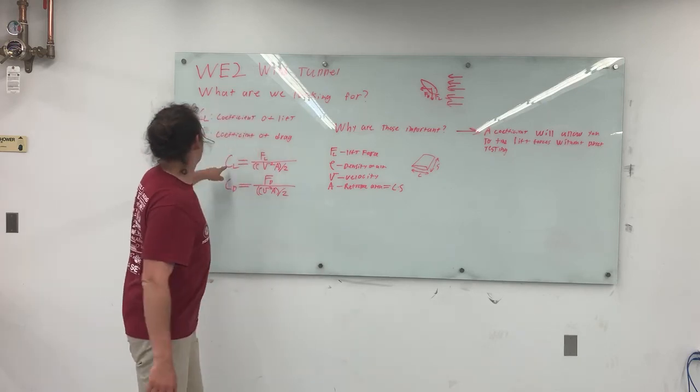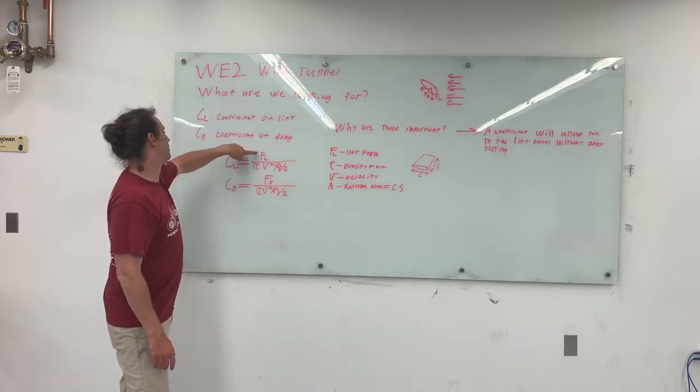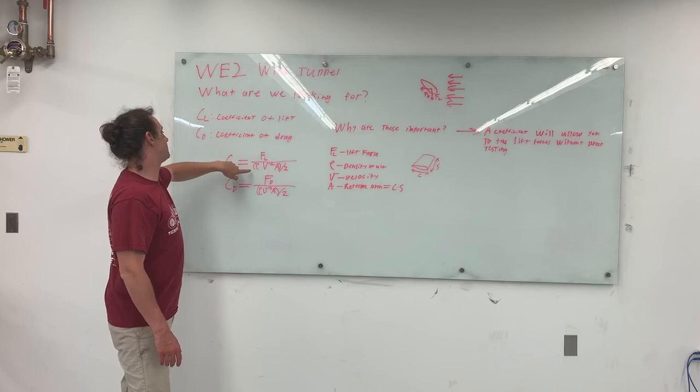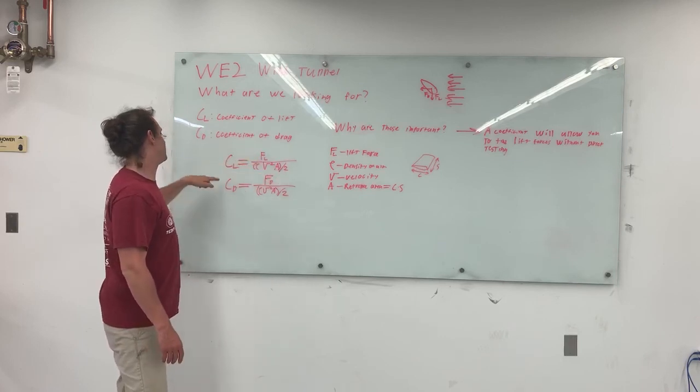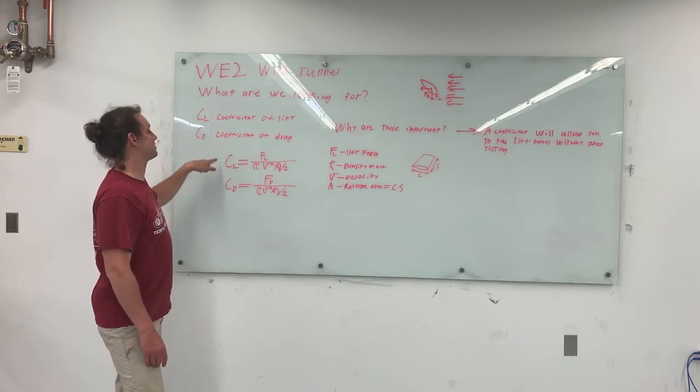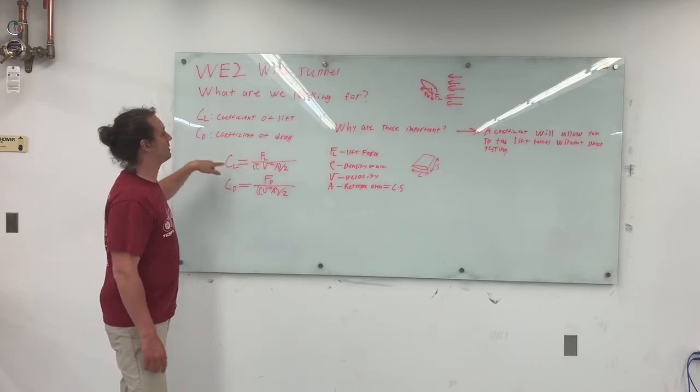So effectively, your coefficient of lift is your lift force divided by rho times v squared times A over two, and the drag coefficient is largely the same thing. So this is the mathematical operation you're going to be doing.